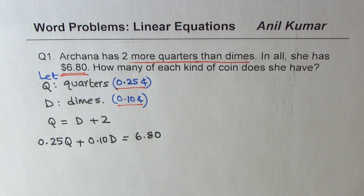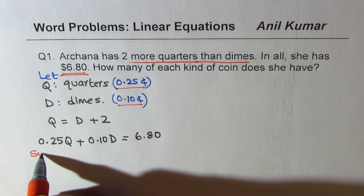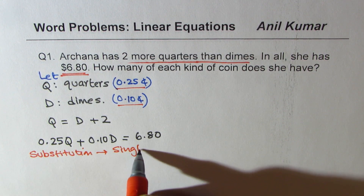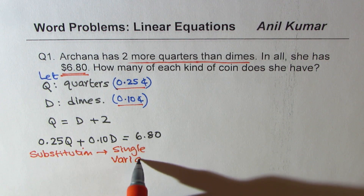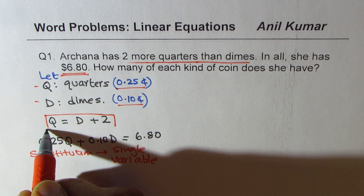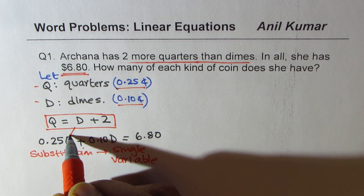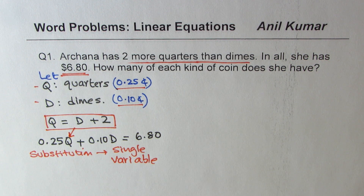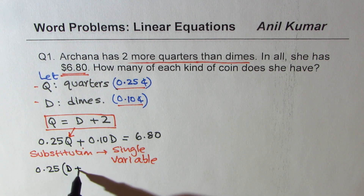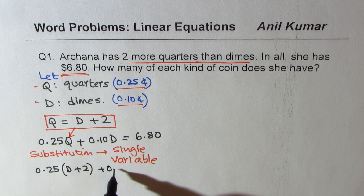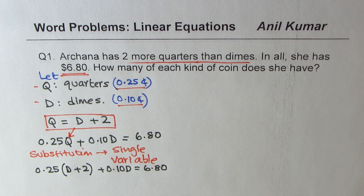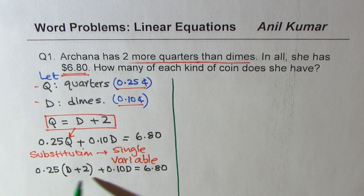Now we need a single variable, so we'll do substitution. We started with two variables, and we know quarters equals D plus 2. We replace quarters with (D + 2), giving us: 0.25(D + 2) + 0.10D = 6.80. That is a linear equation in one variable — do you see only one variable?